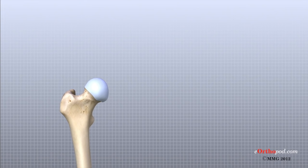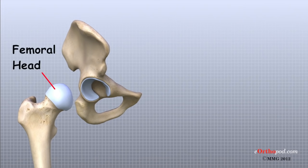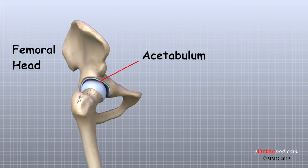The bones that form the hip are the femur or thigh bone and the pelvis. The top end of the femur is shaped like a ball called the femoral head. The femoral head fits into a round socket on the side of the pelvis called the acetabulum.